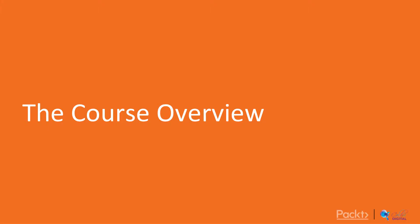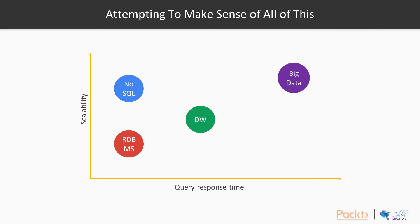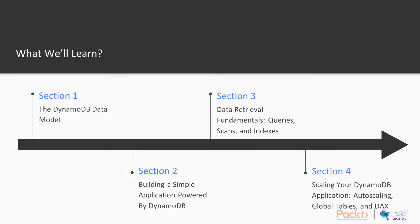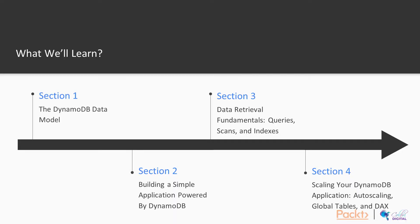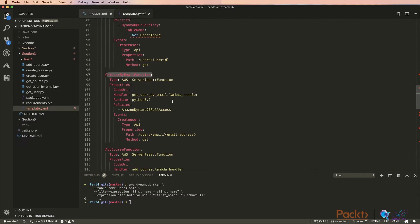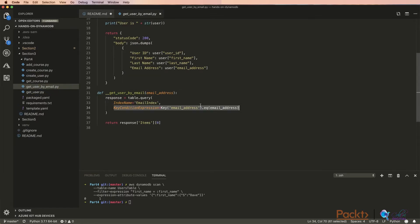Let's jump in and have a look at what we're going to cover in this course. We're going to start with a good understanding of the data model of DynamoDB and compare NoSQL, document stores, and traditional relational applications. Next, we're going to work together to build a simple DynamoDB-powered application. We're then going to move on to build a more complicated application and use that as a way to understand query fundamentals, the query DSL of DynamoDB, and the difference between queries, scans, and indexes.